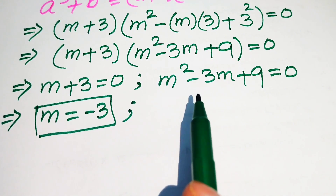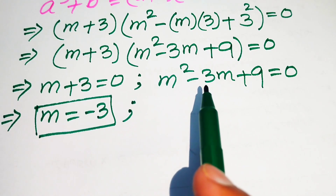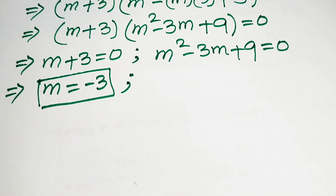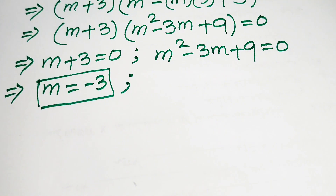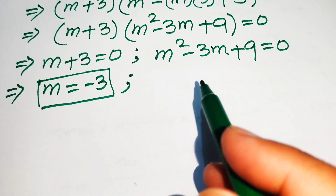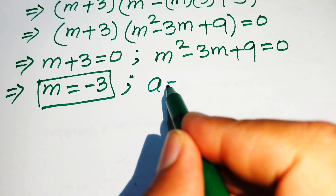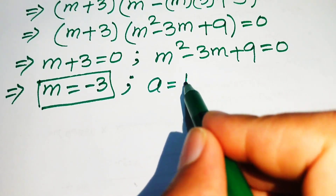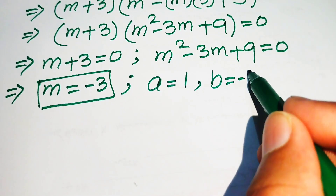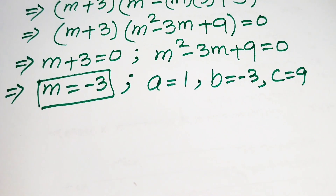For Case 2, we check whether to solve the quadratic using the quadratic formula, factorization, or completing the square. We choose the quadratic formula. The coefficients of m squared minus 3m plus 9 are: a equals 1, b equals minus 3, and c equals 9.